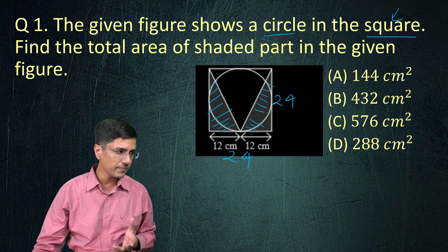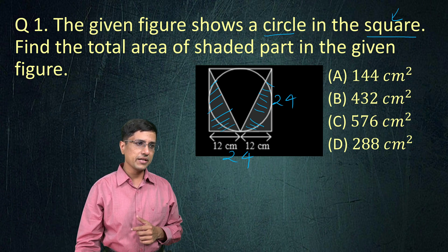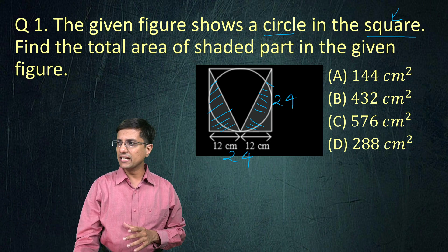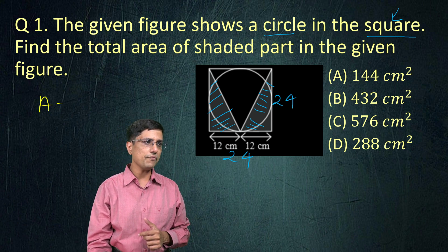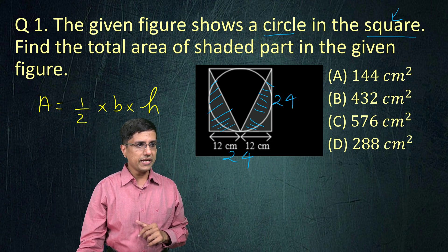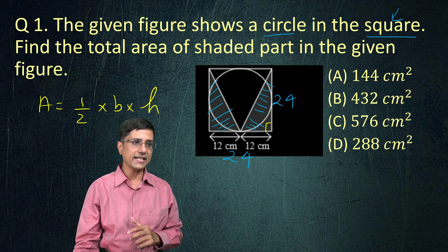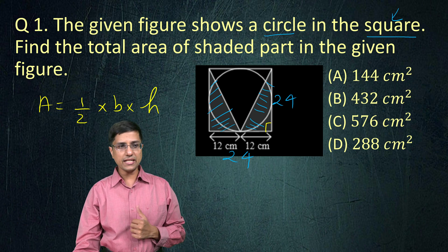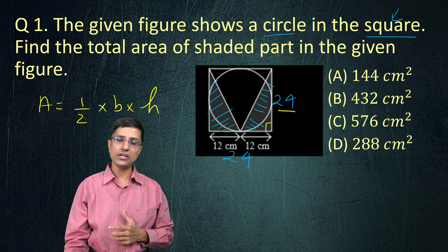That is the first thing we can take away from it. Now, if you look at one of these triangles, we know the area of a triangle is equal to half into base into height. In this triangle, if you look closely, this angle is 90 degrees. This could be the base 24 and then this could be the height 12. So we know everything.